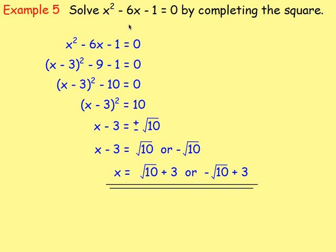To solve by completing the square: complete the square to get (x - 3)² minus 10 equals zero. Add 10 to both sides: (x - 3)² equals 10. Take the square root of both sides — remembering it's both positive and negative, since for example the square root of 16 is both 4 and -4. That leaves x minus 3 equals plus or minus root 10. Add 3 to both values, so x equals 3 plus root 10 or 3 minus root 10.